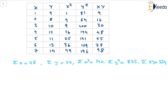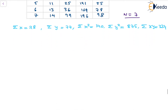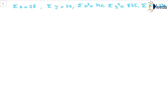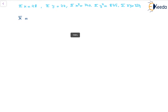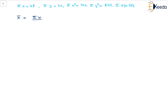We can also see that the value of n will be 7 in this case. Now, first of all, we will start with finding the mean of x and y both. x̄ = summation of x / n = 28 / 7 = 4. Also, ȳ = summation of y / n = 77 / 7 = 11.